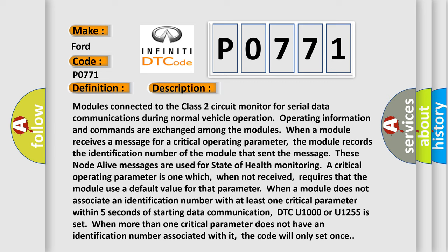These node alive messages are used for state of health monitoring. A critical operating parameter is one which, when not received, requires that the module use a default value for that parameter. When a module does not associate an identification number with at least one critical parameter within five seconds of starting data communication, DTC U1000 or U1255 is set. When more than one critical parameter does not have an identification number associated with it, the code will only set once.